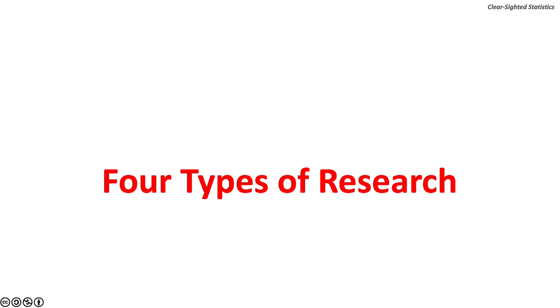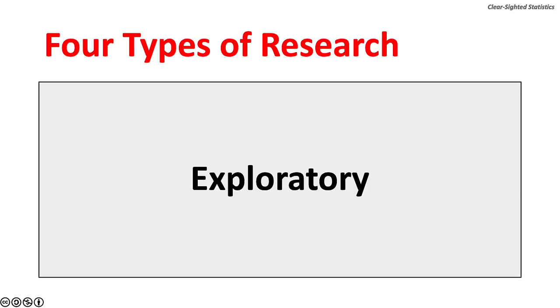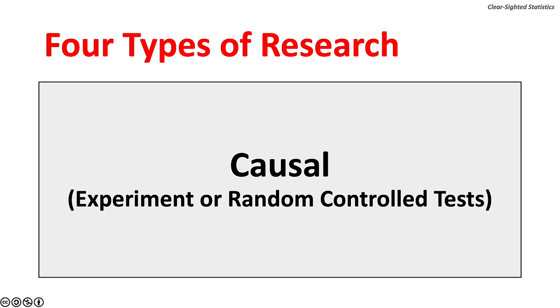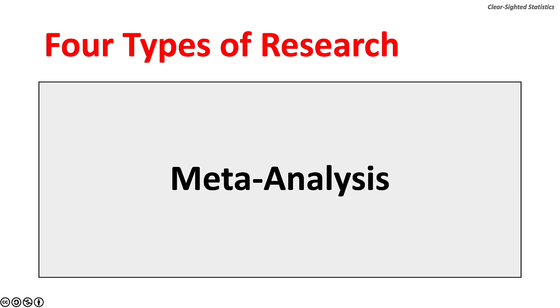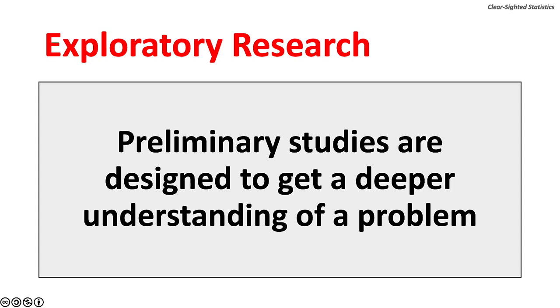There are four types of research. The first is exploratory research. The second is descriptive research. The third is causal research, which includes experiments or randomized controlled tests. The fourth type is meta-analysis. Exploratory research consists of preliminary studies designed to get a deeper understanding of a problem.